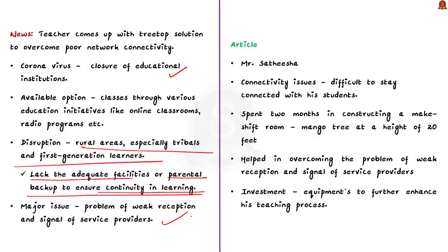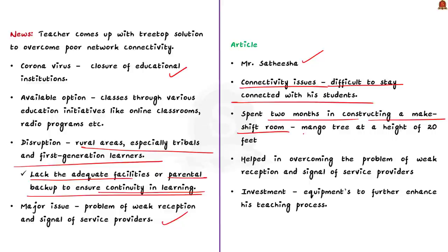In order to overcome these hurdles, a school teacher in Karnataka named Mr. Sadisha, a teacher in Mulloor village in Kodugu district, thought of keeping children engaged in learning even during the lockdown. But connectivity issues made it difficult to stay connected with students. To overcome this, he spent two months constructing a makeshift room at the top of a mango tree, located at a height of 20 feet from the ground using locally available materials, which helped him overcome the problem of weak signal reception.